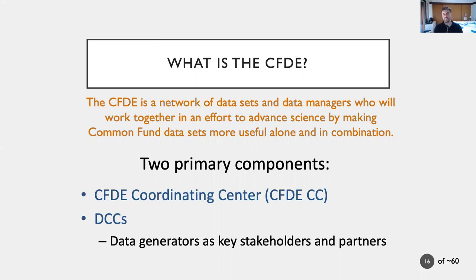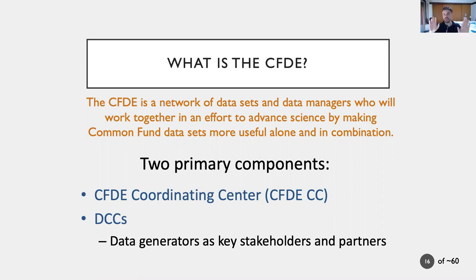What the CFDE is, is a network of datasets and data managers. Our goal is to work together to advance science by making these datasets more useful, both alone and in combination. More useful alone means, for example, expanding the ways GTEx datasets can be used. In combination — gene expression in specific human tissues in GTEx can be combined with metabolomics information to link genes and pathways together. That would be an example where two Common Fund data coordinating centers would actually need to collaborate.